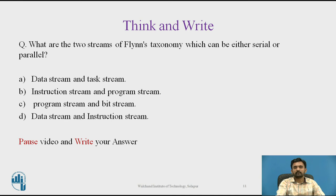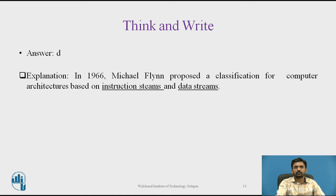Here is a question: What are the two streams of Flynn's Taxonomy which can be either serial or parallel? The answer is option D — in 1966, Michael Flynn proposed a classification for computer architecture based on instruction stream and data stream.